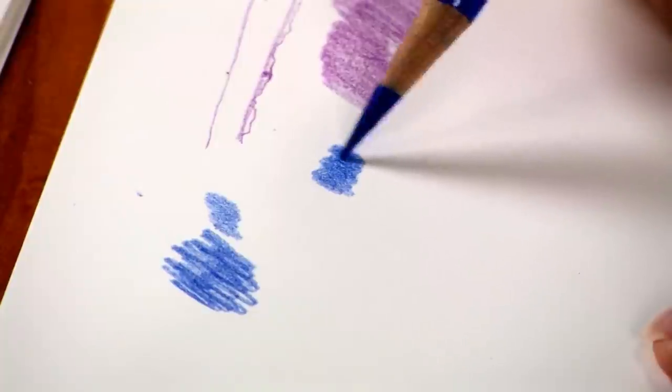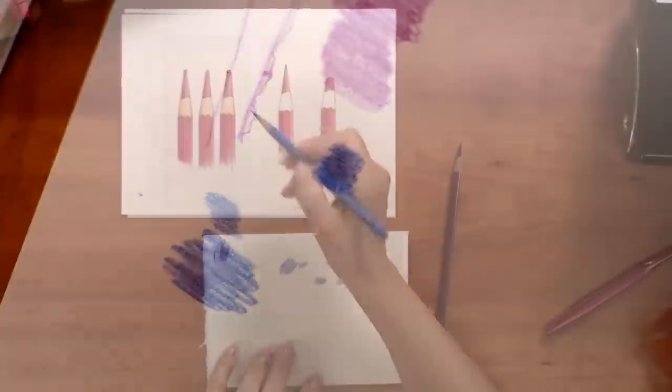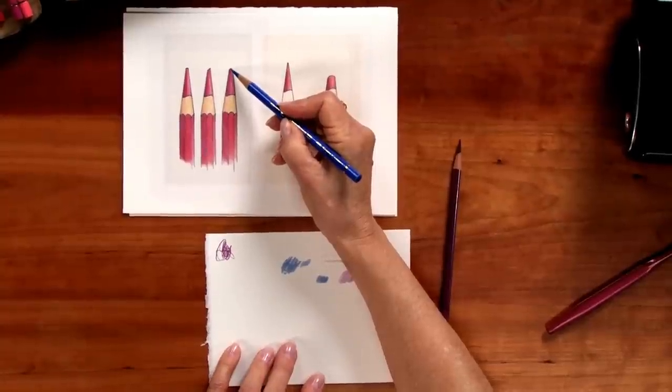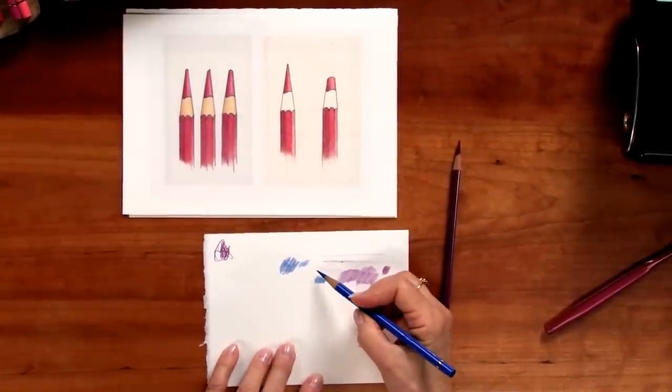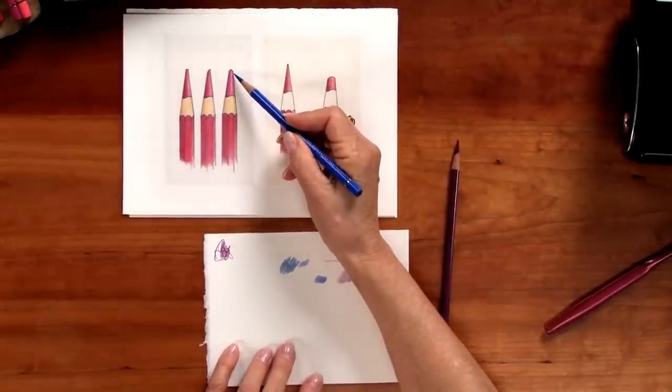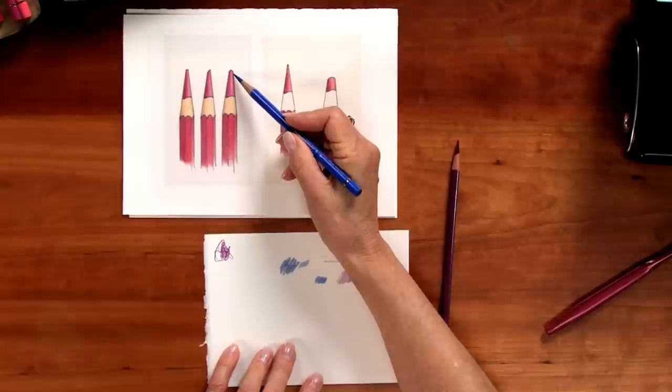As I work and wear it down, eventually my pencil point is going to look like this. It's going to be worn down all the way around as I've rotated the pencil. Now everywhere where I want to use the pencil, every part of that point is too dull for me.